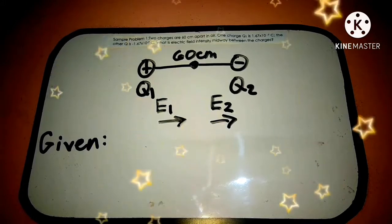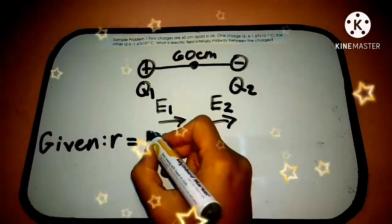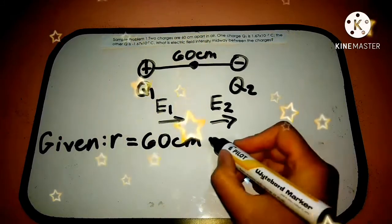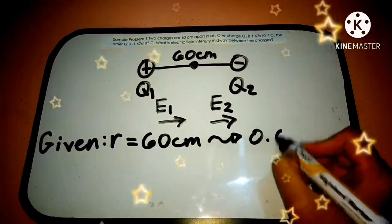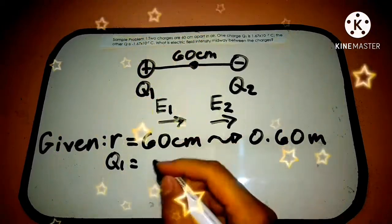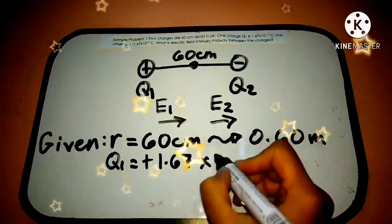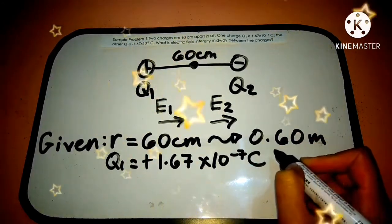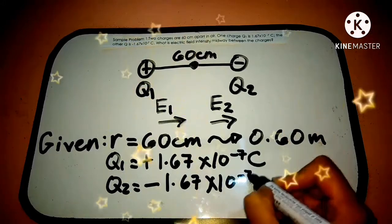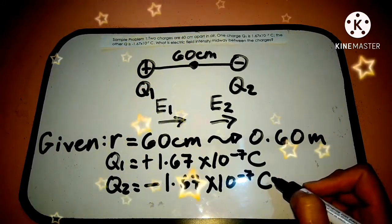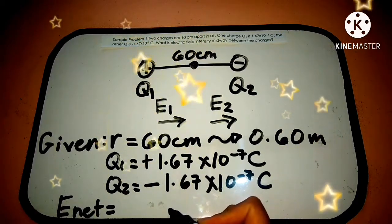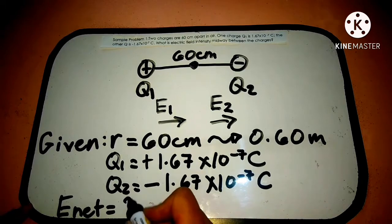Let's identify the given. The distance between the two charges is 60 cm, which we convert to 0.60 meters. Charge 1 has a magnitude of positive 1.67 times 10 raised to negative 7 Coulomb, and charge 2 is negative 1.67 times 10 raised to negative 7 Coulomb. We are solving for the net electric field intensity.